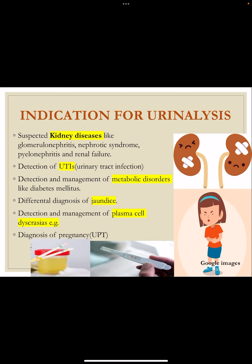Before going to physical examination we should know the various indications for urine analysis. First, for any suspected kidney disease like glomerulonephritis, glomerulopathy, nephrotic syndrome, nephritic syndrome, pyelonephritis, and kidney failure. Then for detection of urinary tract infections, metabolic disorders like diabetes, differential diagnosis of jaundice, plasma cell dyscrasia like multiple myeloma — Bence Jones proteins come in the urine. Also, morning sample is used for diagnosis of pregnancy via the urine pregnancy test.